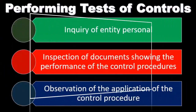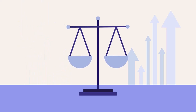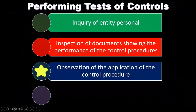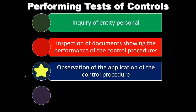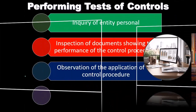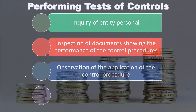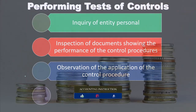We're digging into the documentation — not doing substantive testing now, but testing the controls, testing the procedures, testing the checks and balances. We can also observe the application of the control procedures, going in and actually doing observations to see if the checks and balances and separation of duties are happening. We're doing audit work here, but we're not testing account balances — we're testing the controls. If we can ascertain that the controls are strong, then we can do less of the substantive testing.